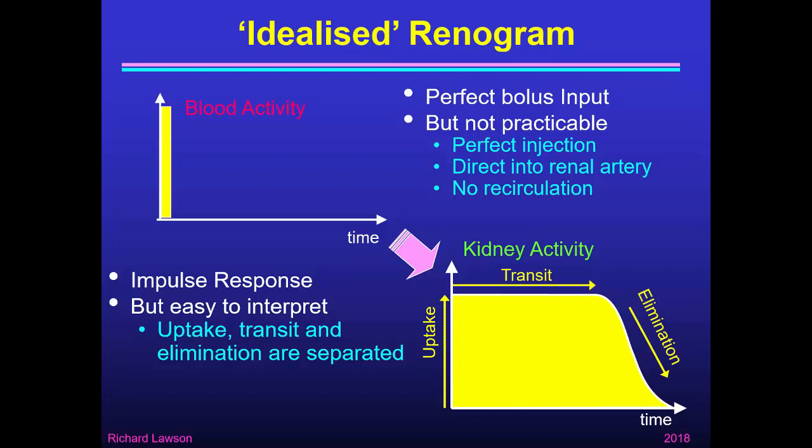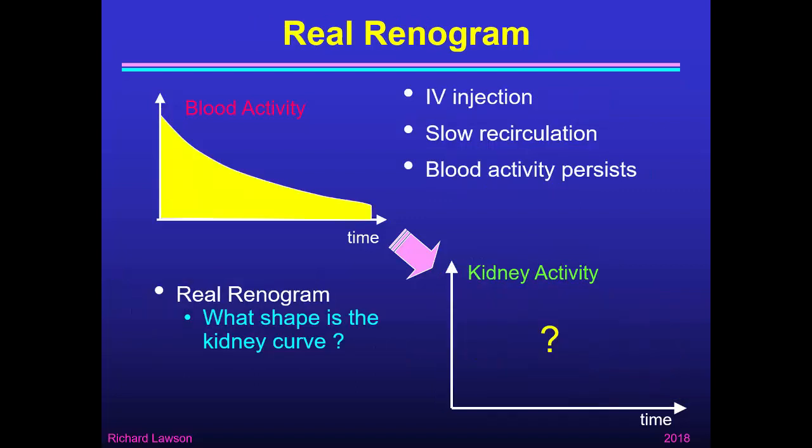Had we achieved this idealised renogram with a perfect bolus input, we would have this idealised impulse response which is easy to interpret because the uptake, the transit, and the elimination are easily separated. But the real renogram is much more complicated. The blood activity isn't a perfect bolus — it always has slow recirculation so the blood activity persists over several minutes. That means the real renogram has a different shape, so we need to ask what kidney activity corresponds to this blood activity.